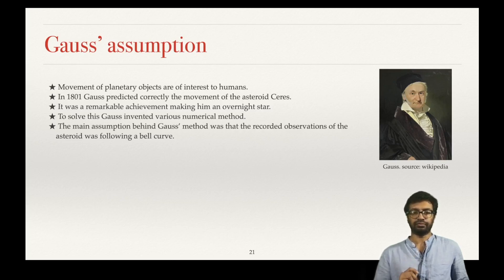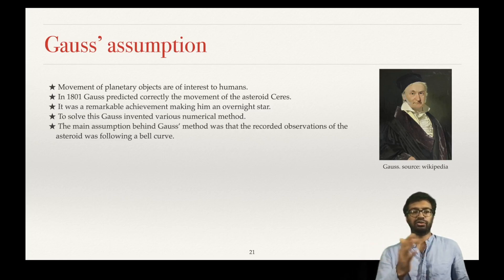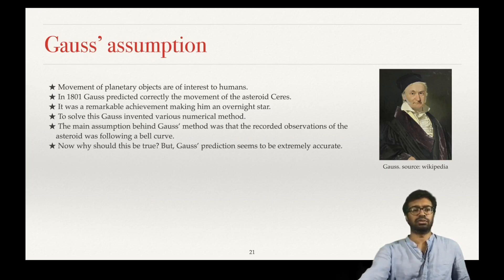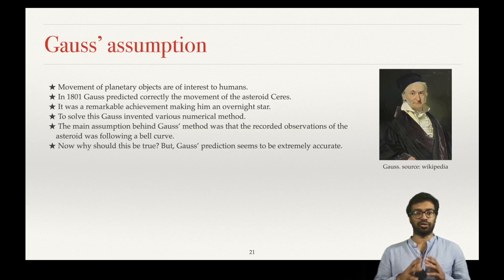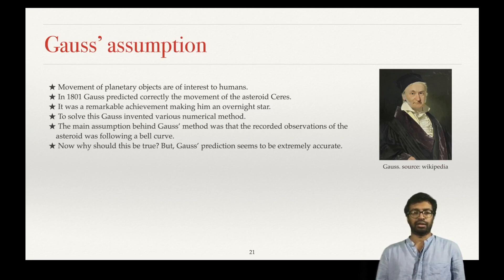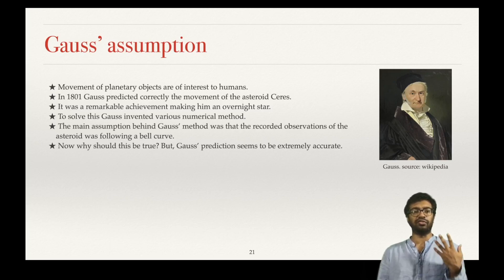If the mean is the correct position, you are going to err on both sides and be close to the mean most of the time, but you can go here and there. That is the assumption Gauss made — that the recorded data observations of this asteroid were following a bell curve. And his prediction turned out to be extremely accurate, so there is something fundamentally true about this assumption.